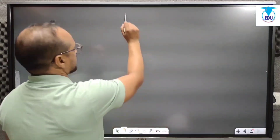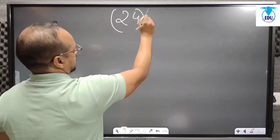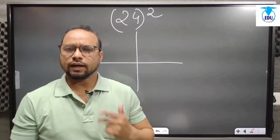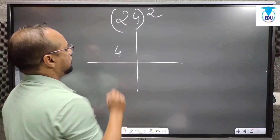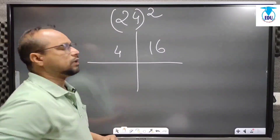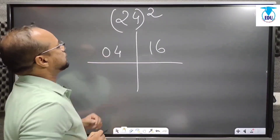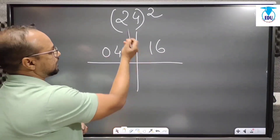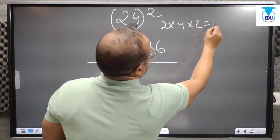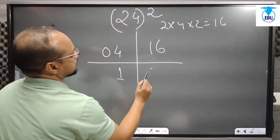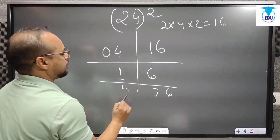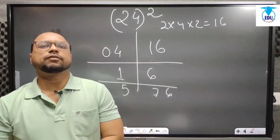One more example: 24 squared. Same method — we take the square of 2 and the square of 4. Square of 2 is 4, and square of 4 is 16. As I told, here always two digits will come, so to make it two digits we put 04. Next, we multiply 2 into 4 into 2, which gives 16. We put 16 in this way, then add the columns: 6 here, 1 plus 6 is 7, 4 plus 1 is 5. So the square of 24 is 576.